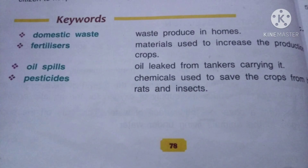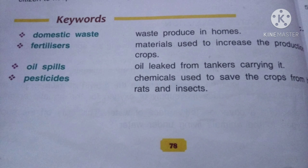First is domestic waste — it means waste produced in homes. Next is fertilizers — it means materials used to increase the production of crops. Next is oil spills — it means oil leaked from tankers carrying it.